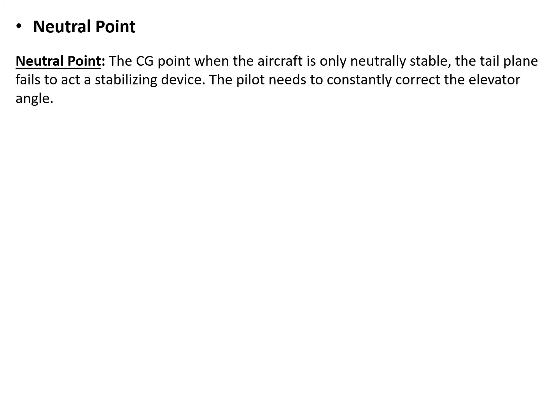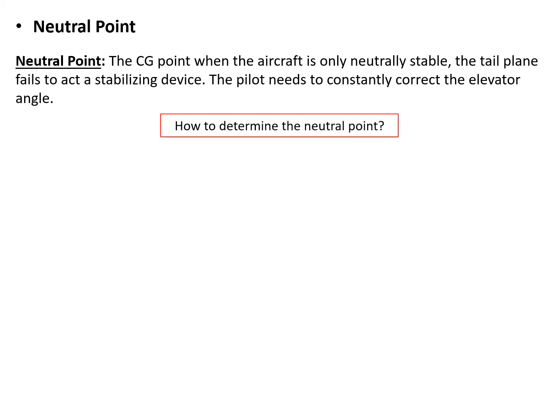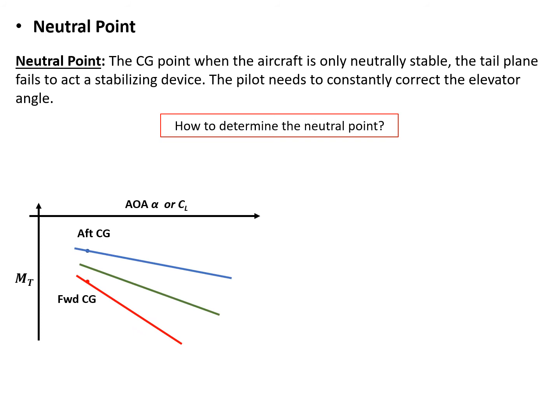Now we should be able to define the neutral point. The neutral point is the CG position at which the aircraft is only neutrally stable and the tail plane fails to act as a stabilizing device. In this case, the pilot needs to constantly correct the elevator angle. We've seen this plot, and now we are adding an extra line — the green line. The red, green, and blue lines each correspond to a different CG location, moving from forward to aft. Each line is roughly straight.